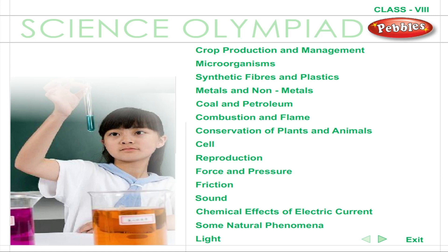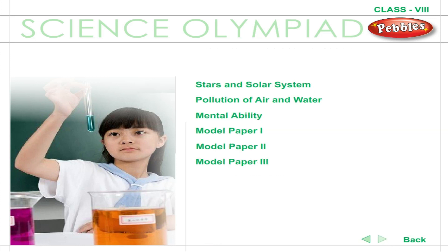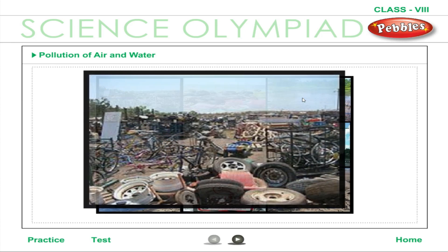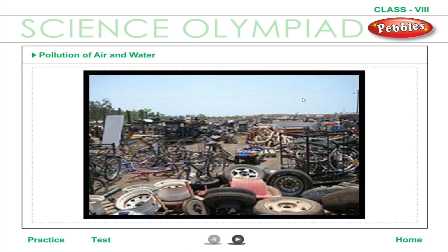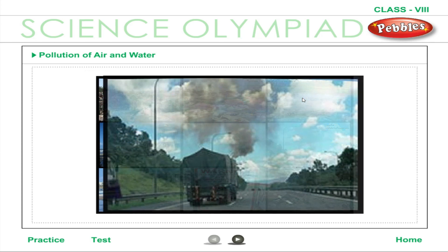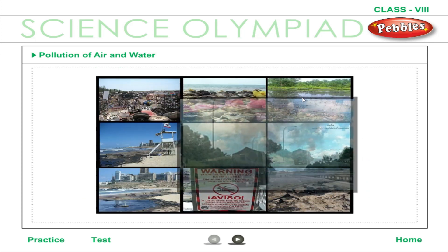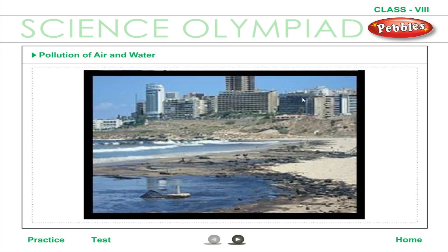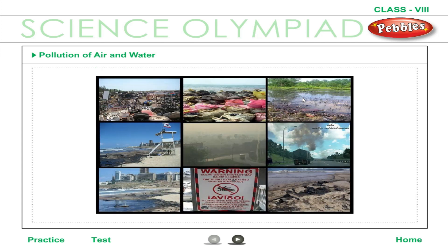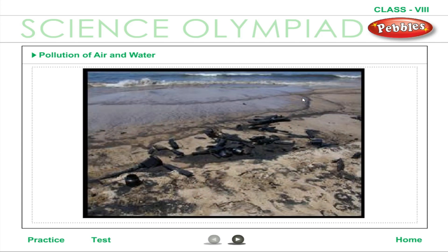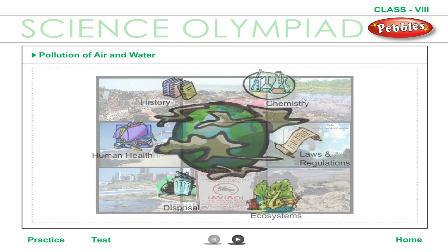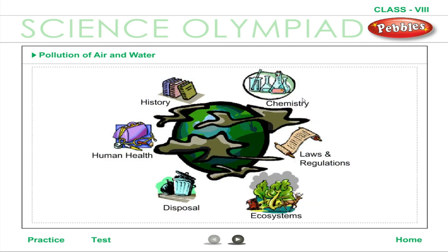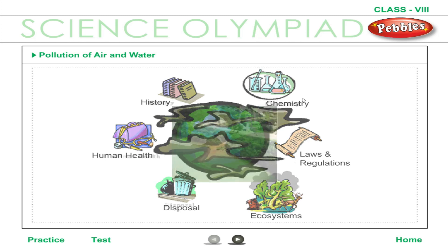Science Olympiad Class 8: Pollution of Air and Water. Pollution is the introduction into the environment of substances which can harm the health, survival or activities of living organisms. Pollutants may be biodegradable or non-biodegradable. Biodegradable pollutants can be broken down by biological agents, whereas non-biodegradable pollutants cannot.